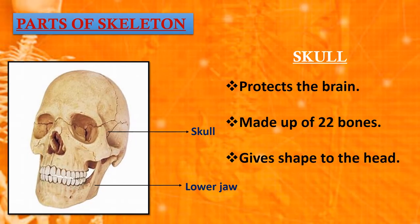Human skeleton has different parts. Let us study about them. The first part is the skull. The skull is a bony structure in our body that protects the brain. In an adult human being, the skull is normally made up of 22 bones. They are joined together to cover the brain and to give shape to the head.